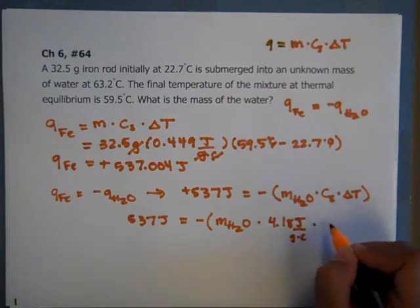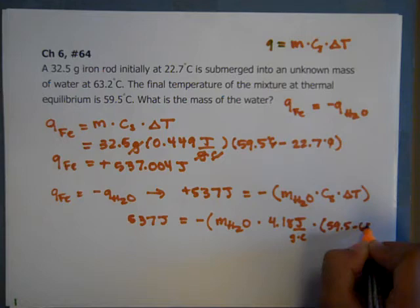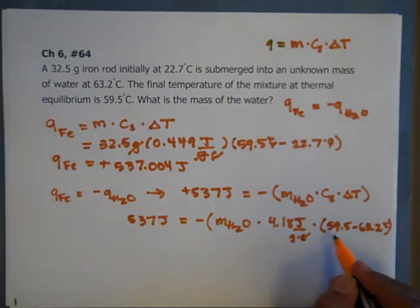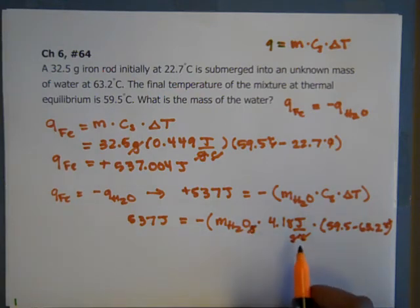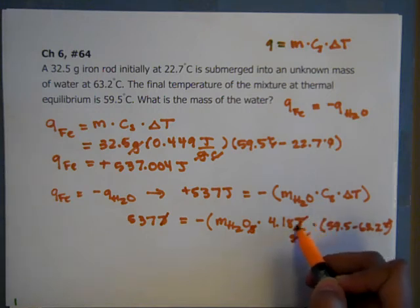And our delta T is going to be, 63.2 is our initial. So our final is 59.5 minus 63.2, degree Celsius. So once again, the units cancel. And this is going to be in grams. And so we're left with joules and joules on both sides. So it cancels. So we're good to go.